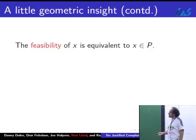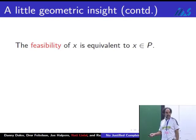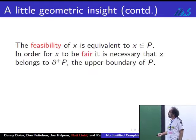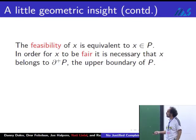From this geometric perspective, what does it mean that the solution is feasible? It just means that x is in this polytope P. Fairness means that x has to sit on the upper boundary. I'm using this notation for boundary just to make sure I'm not talking about the hyperplanes x_i equals 0. This refers to the upper part of the boundary of this polytope.